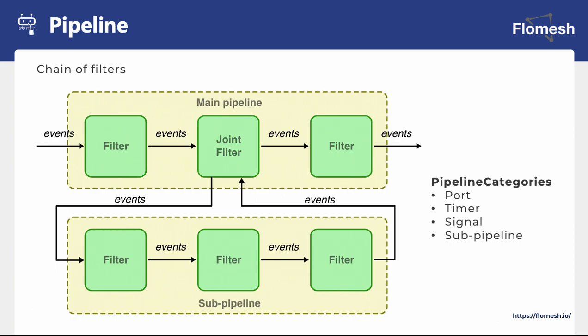The chain of filters in Pype is known as the pipeline, and that's the key concept. Pype provides four different categories of pipeline. The port pipeline is used when you are writing a network service listening at a particular port. If you need cron job-like functionality — periodic timers — then you go with the timer pipeline. If you need to process signals sent to the Unix process, then you work with the signal pipeline. The sub-pipeline is a unique one that can only be called by the joint filter. Port, timer, and signal pipelines are known as root pipelines and cannot be invoked by any joint filter.